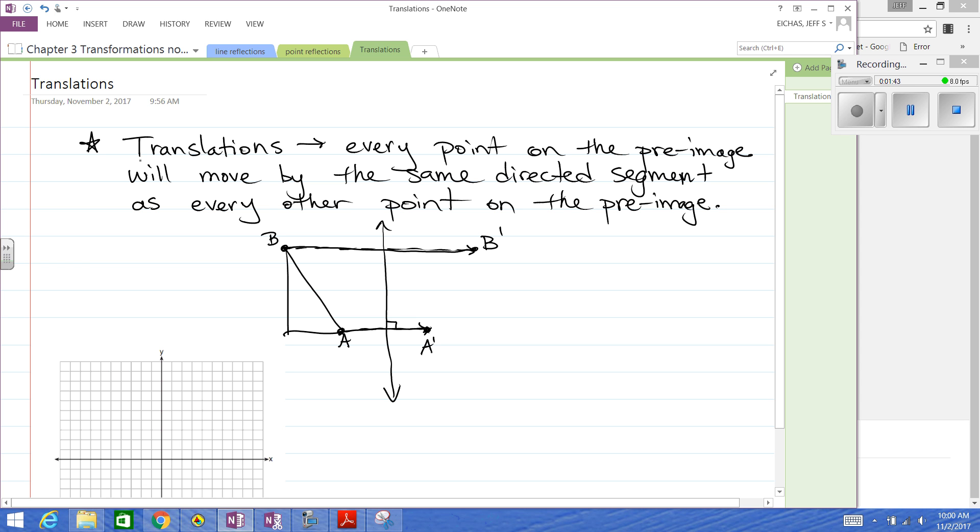But with translations, every point is going to move by the same amount in the same direction, everything. So that's what's going to make translations different. And that's why we talked about directed segments in the previous chapter so that we knew what we were talking about there. All right, so let's take a look.